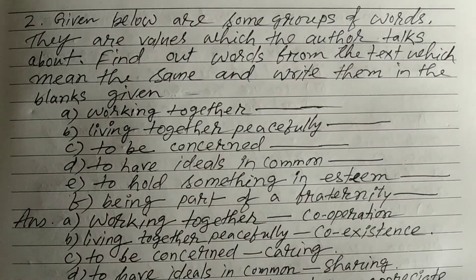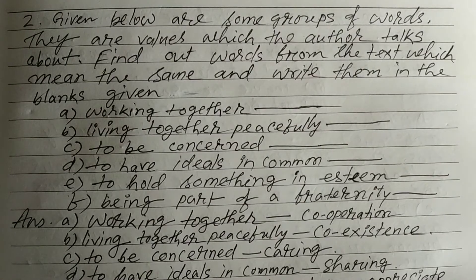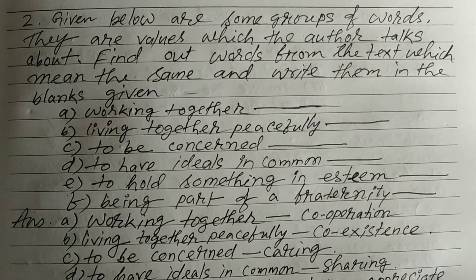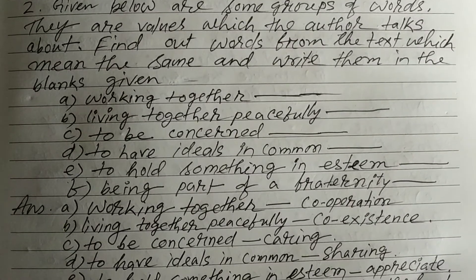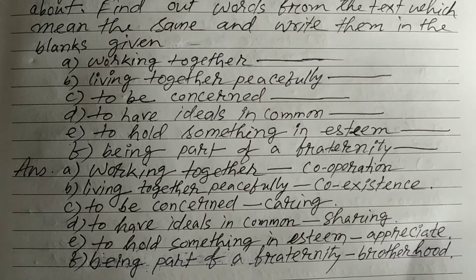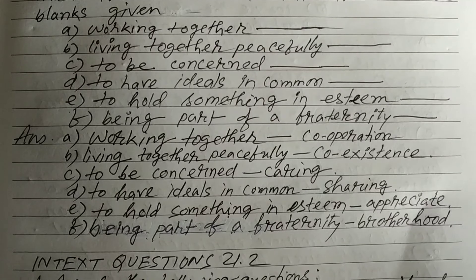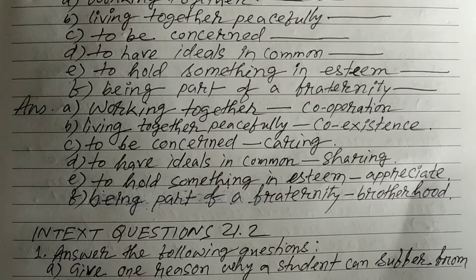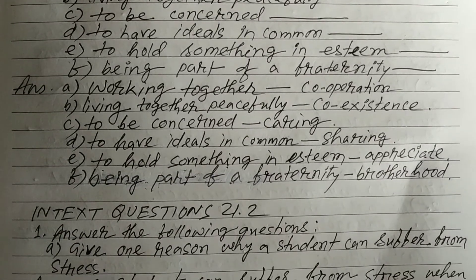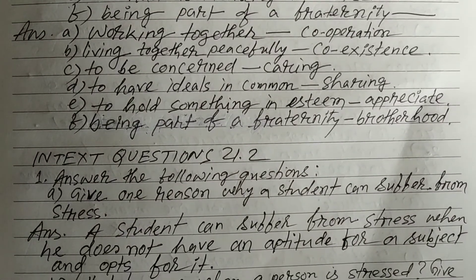Question 2: Given below are some groups of words — values which the author talks about. Find words from the text which mean the same and write them in the blanks. A) Working together — cooperation. B) Living together peacefully — coexistence. C) To be concerned — caring. D) To have ideals in common — sharing. E) To hold something in esteem — appreciate. F) Being part of a fraternity — brotherhood.